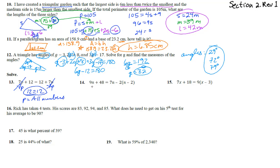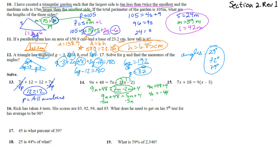Number 14: 9n plus 48 equals 7n minus 2(n minus 2). Distributing gives 9n plus 48 equals 5n plus 4. Subtracting 5n from both sides gives 4n plus 48 equals 4. Subtracting 48 gives 4n equals negative 44, so n equals negative 11.